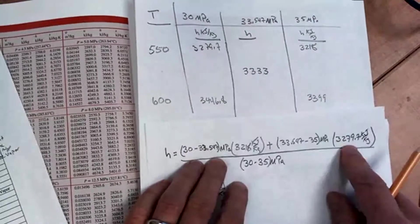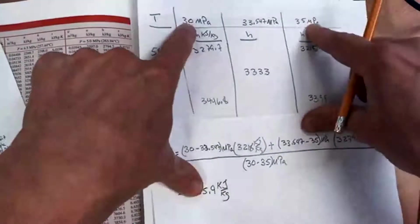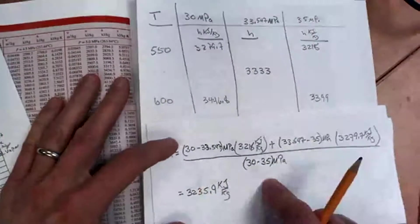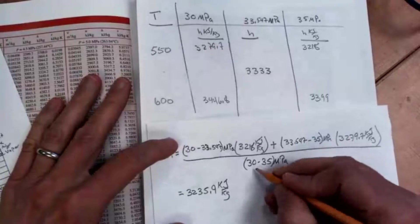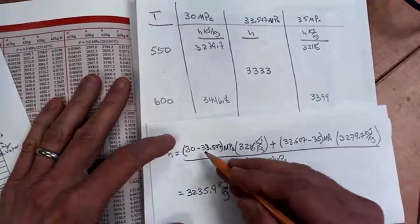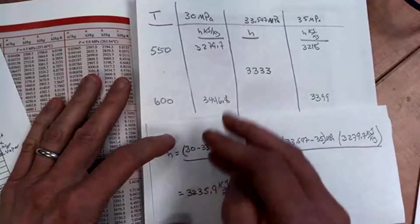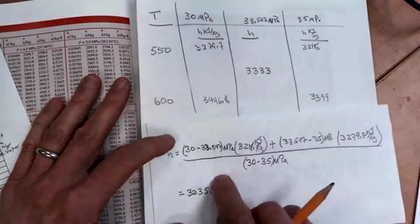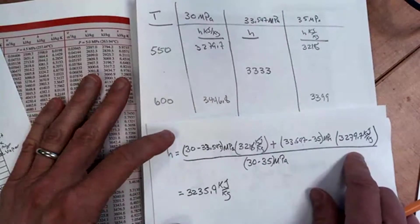Plus 33.547 minus 35 times this value, 3,279.7. All divided by the difference between 30 and 35 here. Notice that don't change the signs and make these positive. Leave everything negative. Leave it just as it would come out in the pattern because these negatives will all take care of themselves.